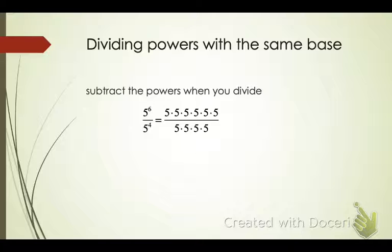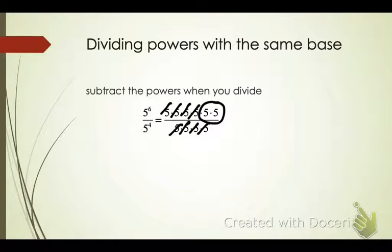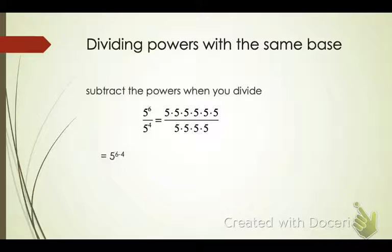If I have 5 to the 6th divided by 5 to the 4th, you should notice I have 6 fives on the top and 4 fives on the bottom. What would happen is that I can cross-cancel a bunch of them, and what am I left with? I'm just left with two of them. So that's why we're going to subtract our powers — subtract the bottom ones from the top ones to get an answer. So 5 to the 6 minus 4 power equals 5 squared.